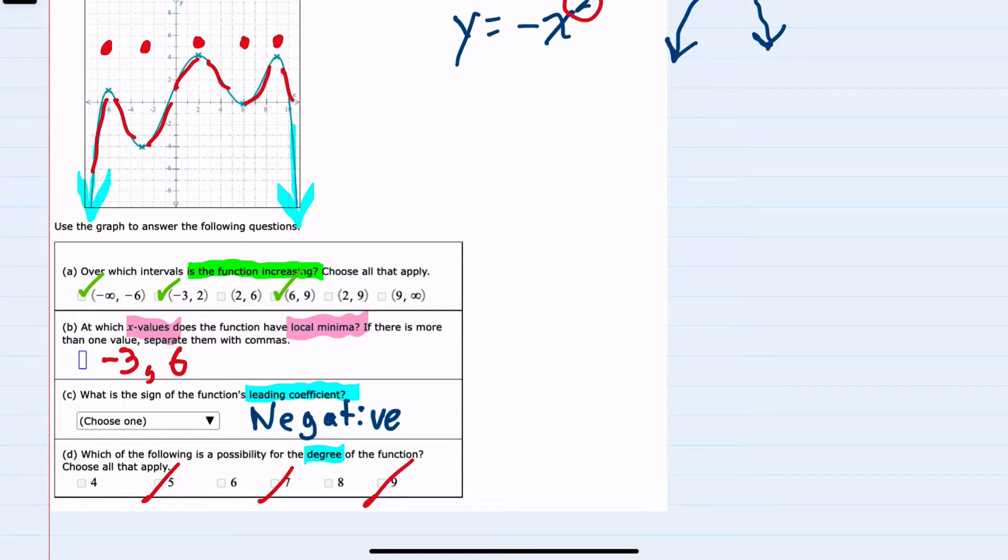We saw earlier that for x equals 2 there's one change in direction. So this would require at least x equals 3 to change twice, x equals 4 to change 3 times, x equals 5 to change 4 times, and x equals 6 to change directions 5 times.